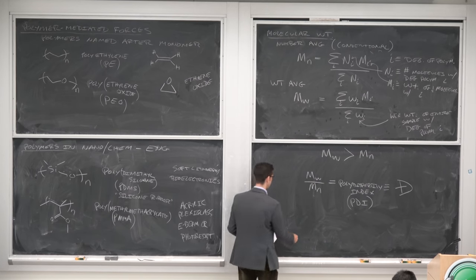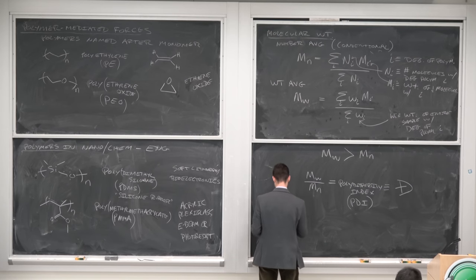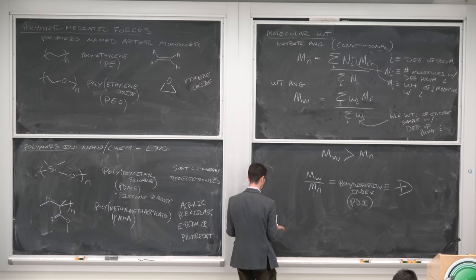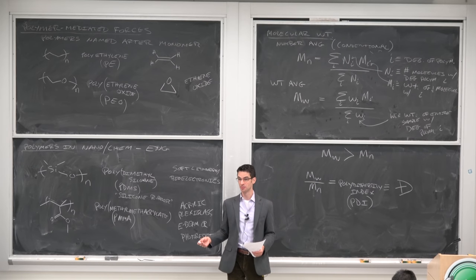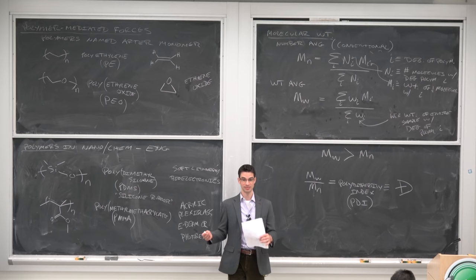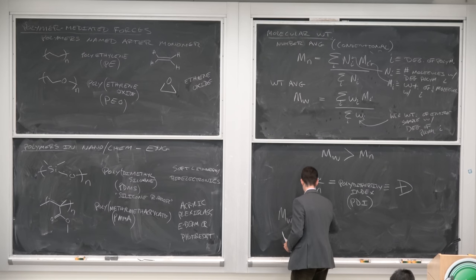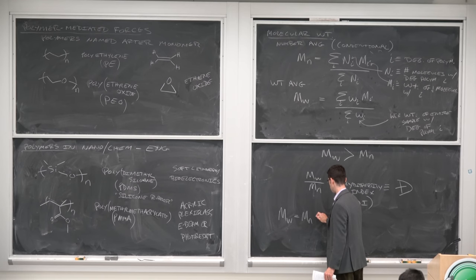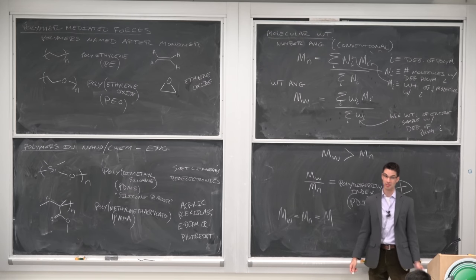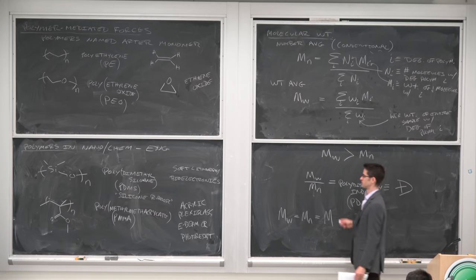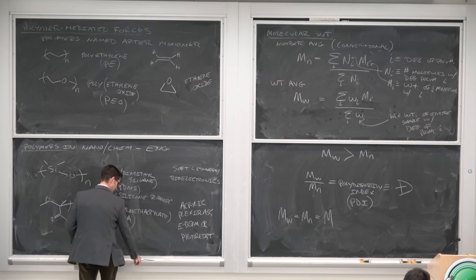If you have a polydispersity of one — which we'll assume for most cases regarding intermolecular and surface forces — then Mw equals Mn, and we just call this M for the rest of the course.